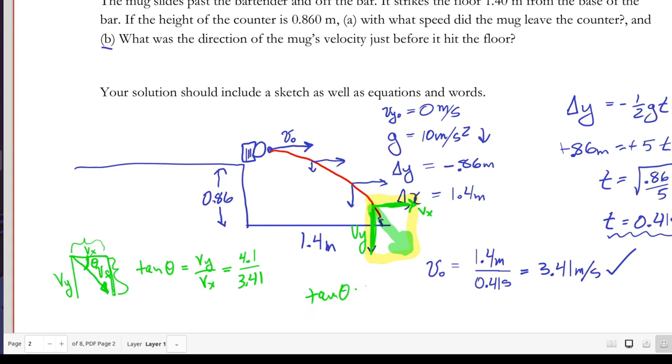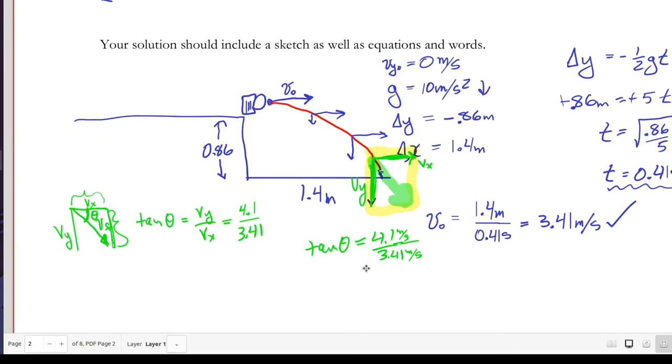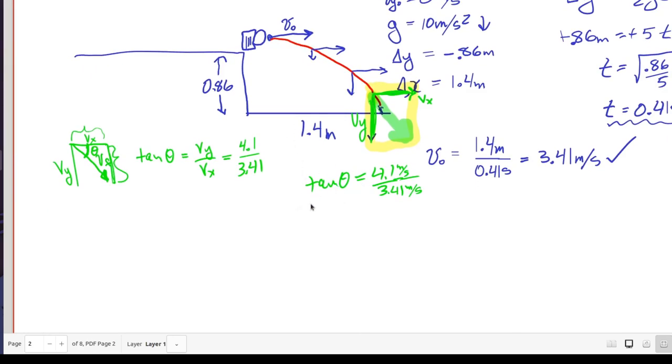So we have 4.1 here over the horizontal speed, which we found out was 3.41. So we're saying that tan theta equals 4.1 over 3.41. That's meters per second and meters per second. And it's important to note that in physics the value of a trig function like this is always going to be a dimensionless quantity. We see that that checks out. These units cancel top and bottom.